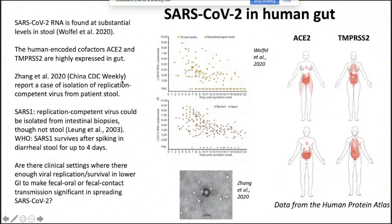People have begun to look for replication-competent virus in human stool. There is one report out of China of a single isolation of replication-competent virus from patient stool — the study used cultured cells and electron microscopy, though it was not totally convincing. For SARS-1, replication-competent virus could be isolated from intestinal biopsies, though not from stool. The WHO studied SARS-1 spiked into diarrheal stool and found it could survive for up to four days.